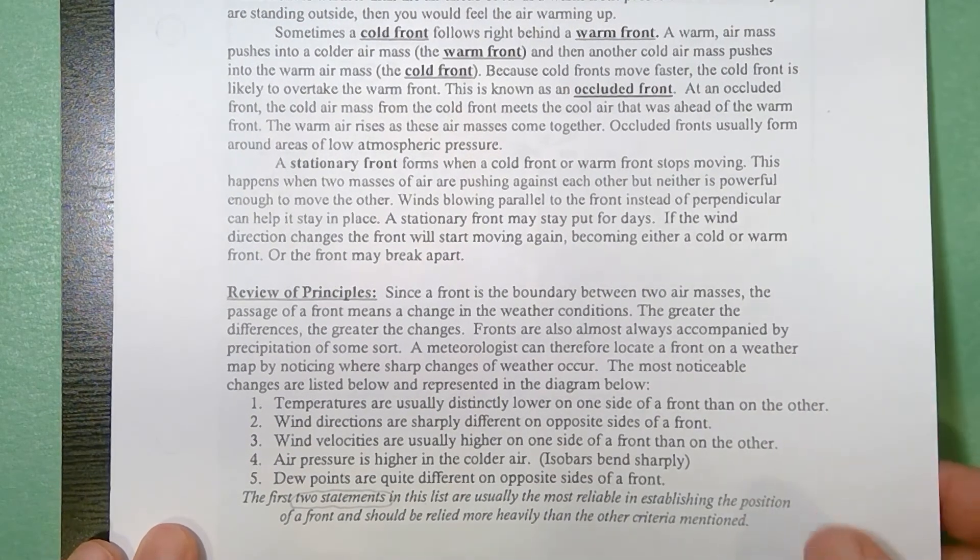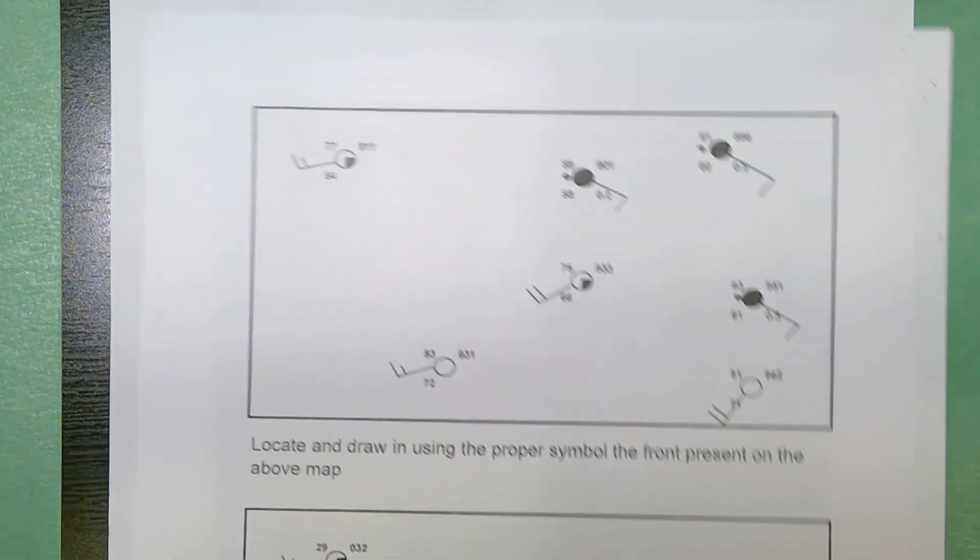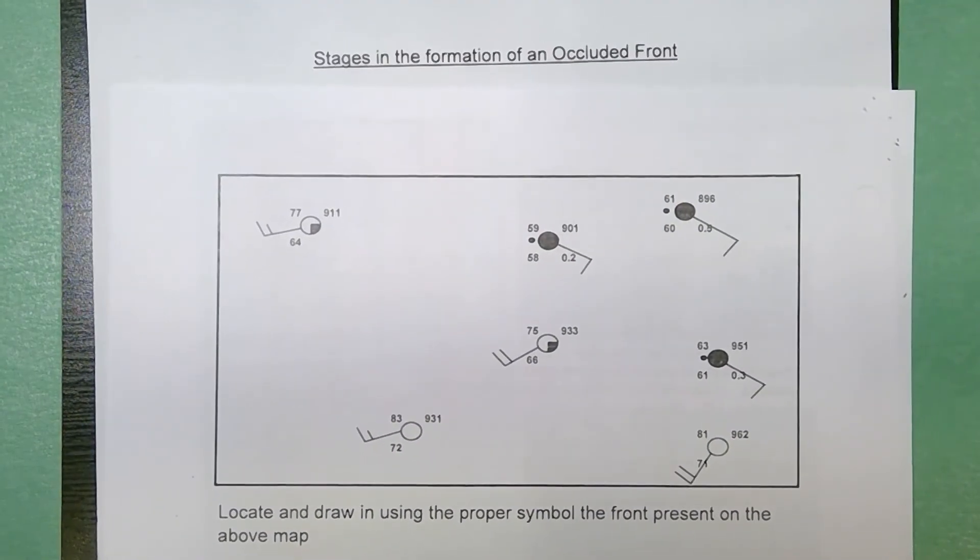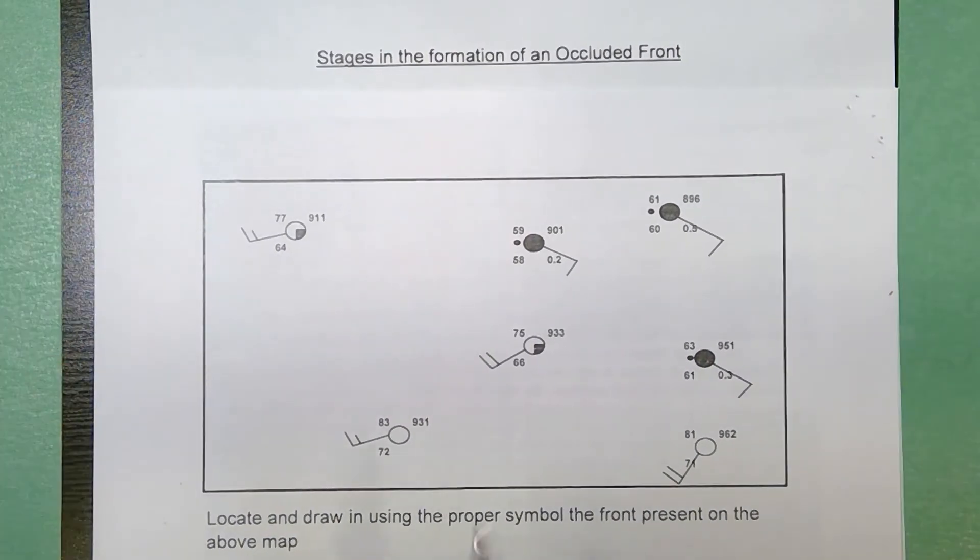So let's take a look. We're going to flip this over. We're going to start off with two relatively simple maps. All right this map I've got seven stations so I want you to try to draw a line that separates them into two groups. Honestly one side is going to be warmer the other side is going to be colder. Pause the video now and see if you can identify where the frontal boundary is.